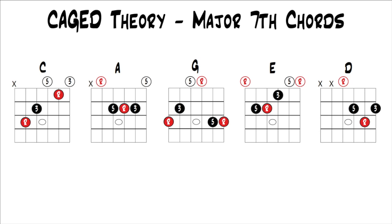This is part 12 from our series, Caged Theory. If you'd like to go back and start at the beginning, you can click the link on the screen. So far, all the cage chords we've been looking at have been triads — major triads or minor triads. But you can actually build cage chords with seventh chords as well. In this lesson, we're going to look at the first one: major seventh chords.